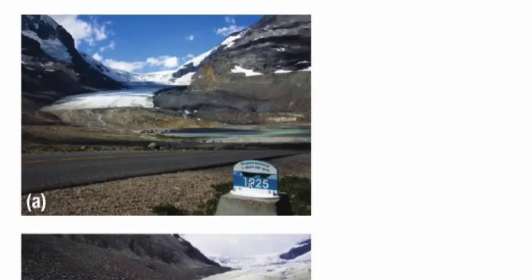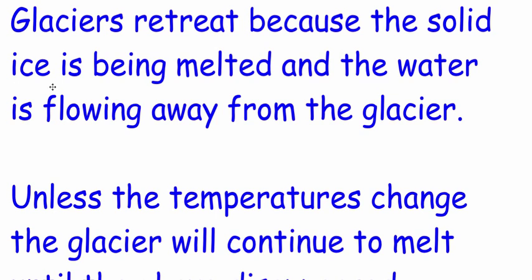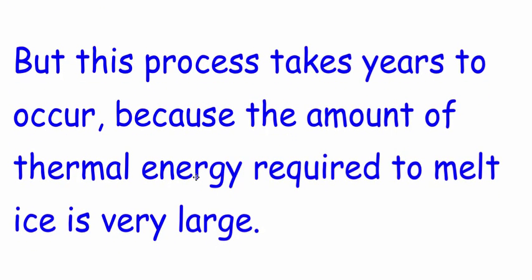Here's another glacier on this side of the highway. You can see the ice was here in 1925. Now it is, I mean, difficult to judge, but maybe several hundred meters over there. So that's how far it's gone in almost 100 years. So glaciers retreat because the solid ice is being melted and the water is flowing away from the glacier. A process takes years to occur because the amount of thermal energy required to melt ice is extremely large.